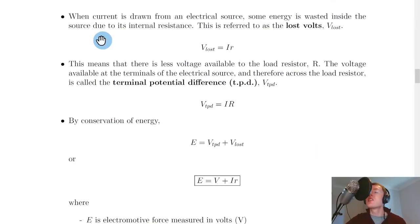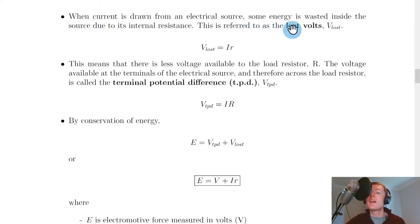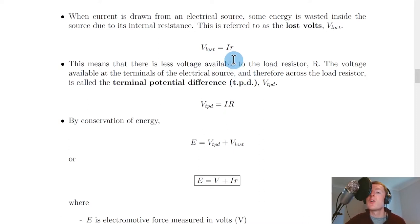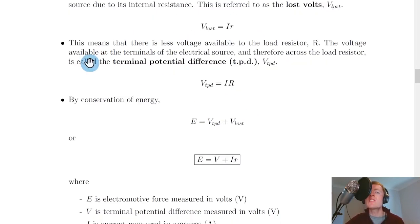When current is drawn from an electrical source, some energy is wasted inside the source due to its internal resistance. This is referred to as the lost volts, labelled V_lost. The expression for lost volts in terms of current and internal resistance is V_lost = ir — notice this is just a form of Ohm's law V = ir, but using V_lost and lowercase r.